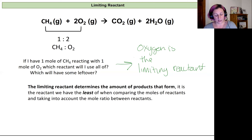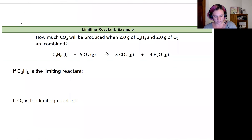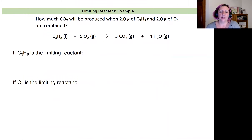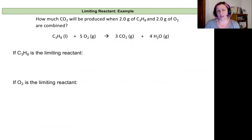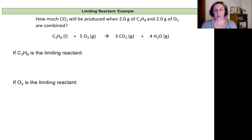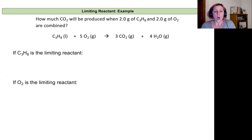When we do limiting reactant problems we're really doing a stoichiometry problem two ways, trying to predict which reactant is the limiting reactant — which will produce the least amount of product. There are a couple of algorithms for solving this. I'm going to show you a way that is simple but a little longer: as long as you're confident in stoichiometry calculations, you'll treat this as two stoichiometry problems and compare at the end.